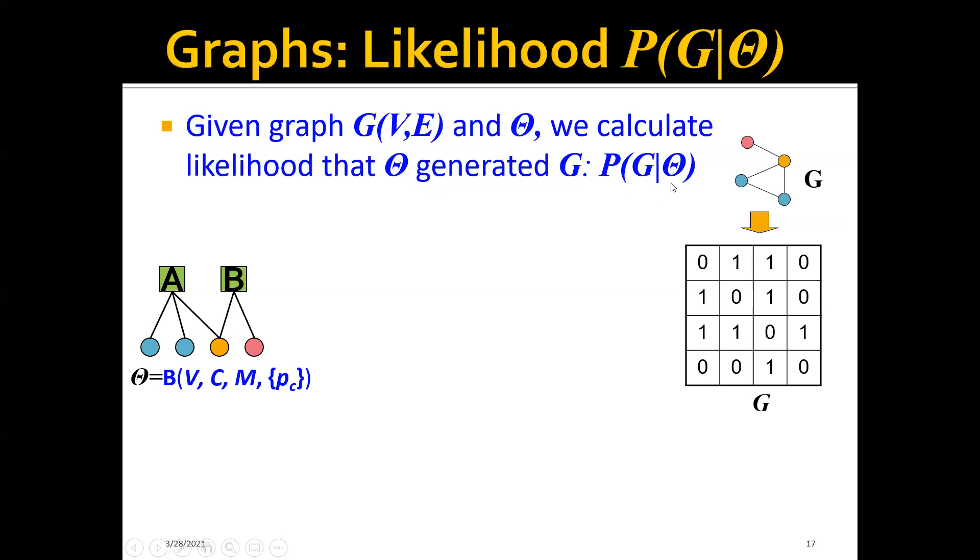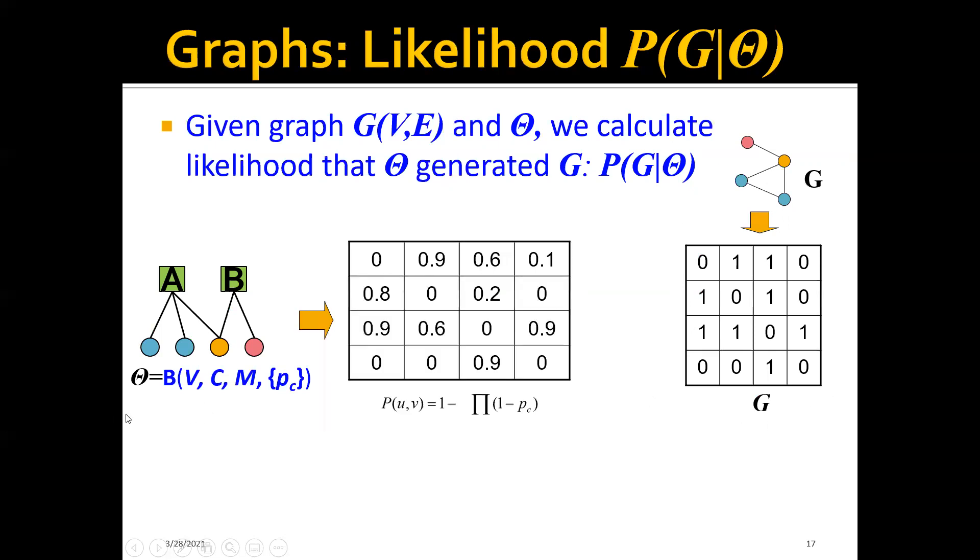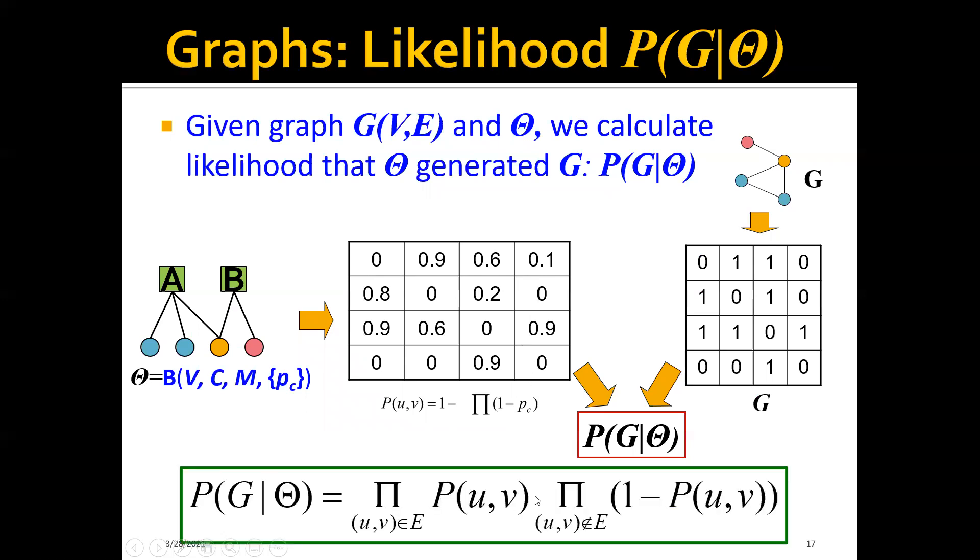Let's say that we're given the parameter θ here on the left and we're also given a graph here on the right. Then we will first compute the probabilistic adjacency matrix using this equation that we have talked about before. And then we will compute the likelihood of this graph given this probabilistic adjacency matrix using this equation.